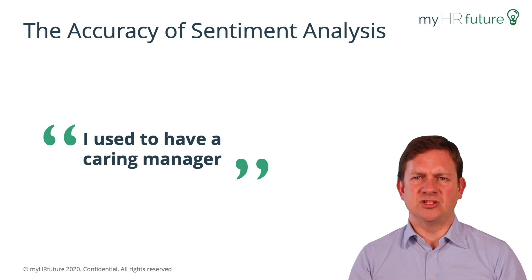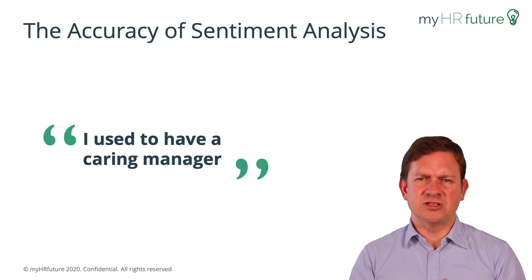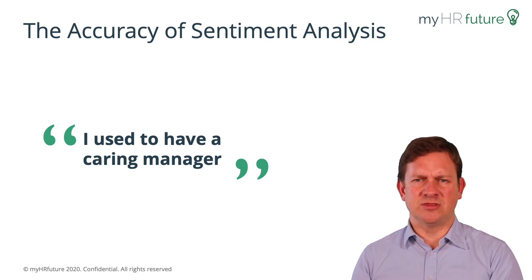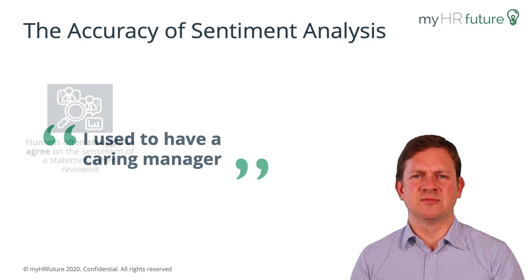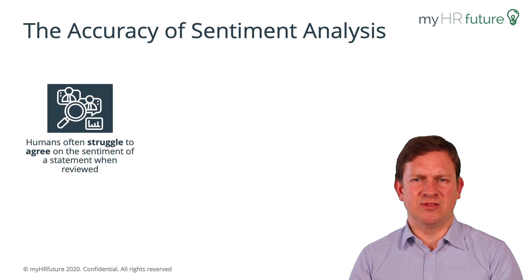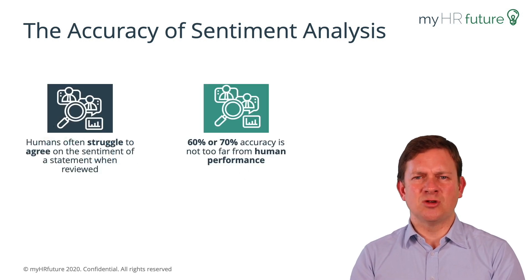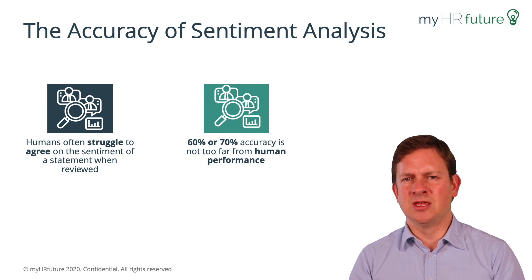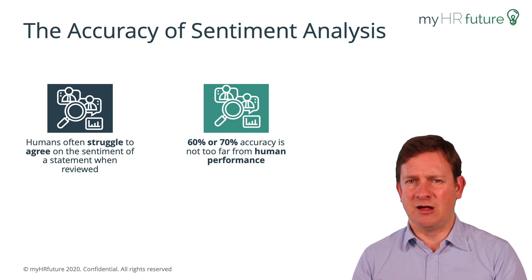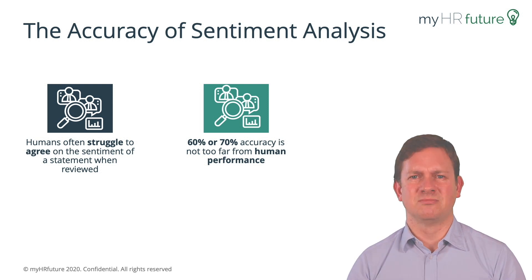The other complication is that when we look at studies where multiple people have reviewed the sentiment of a statement, we find that humans can't agree on this. So whereas 60 or 70% accuracy may not feel like a lot, it's actually not too far off human performance.